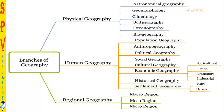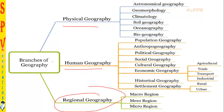Geography is further divided into physical geography, human geography, and regional geography. Physical geography deals with the core physical aspects of the earth. Human geography deals with the interaction between humans and geography. Regional geography includes biogeography and many other related concepts.